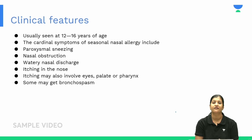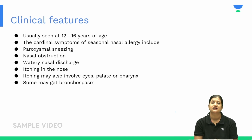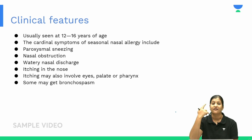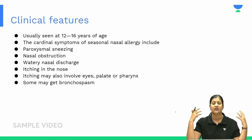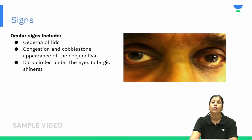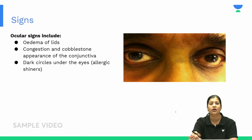The classic clinical features of nasal allergy include paroxysmal sneezing — repeated episodes of sneezing — along with nasal obstruction, watery nasal discharge, and itching in the nose, mouth, palate, pharynx, throat, and ears.